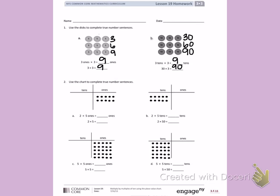Number 2. Use the chart to complete true number sentences. On letter A, I see that there are 2 rows of 5 1's. That gives me a total of 10 1's. 2 times 5 equals 10.